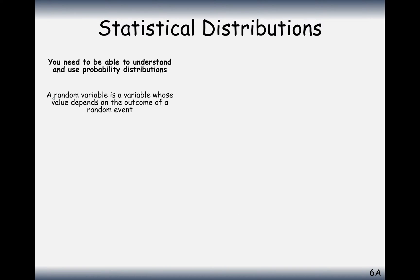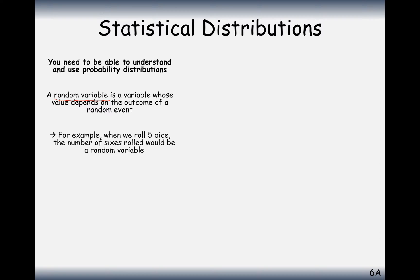A key term here is a random variable. A variable is a letter that has an associated number value or a given range of number values. A random variable is a variable whose value depends upon the outcome of a random event. For example, if we roll a dice five times, the number of sixes rolled would be a random variable — we might get three sixes, and that outcome has a given probability attached to it. A random variable can have multiple outcomes, and each of those outcomes will have a certain probability.